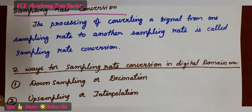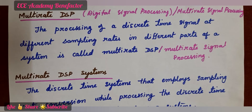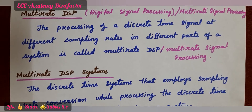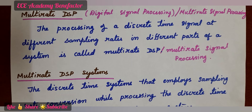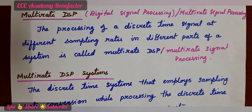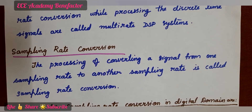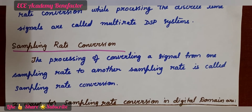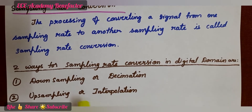In this class we have seen: multirate signal processing, which is the processing of a discrete time signal at different sampling rates in different parts of the system; multirate DSP systems, which are systems that employ sampling rate conversion; and sampling rate conversion, which is the process of converting a signal from one sampling rate to another.